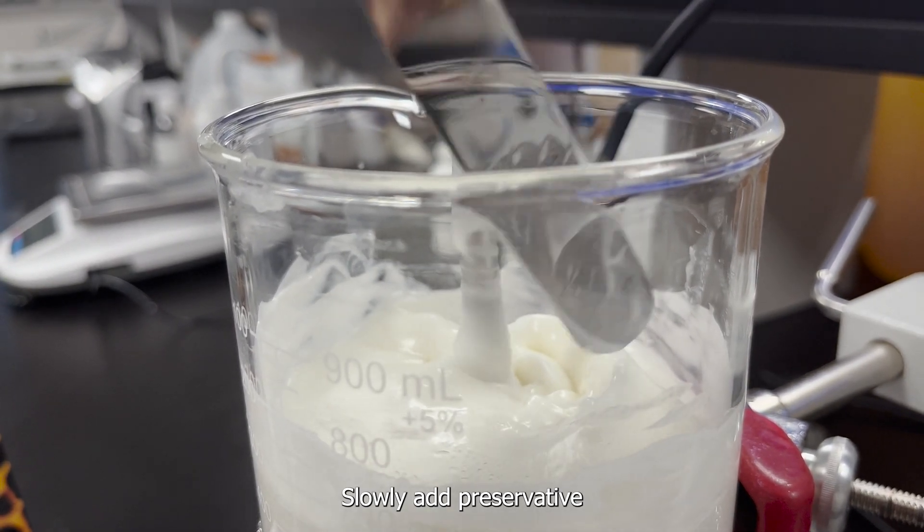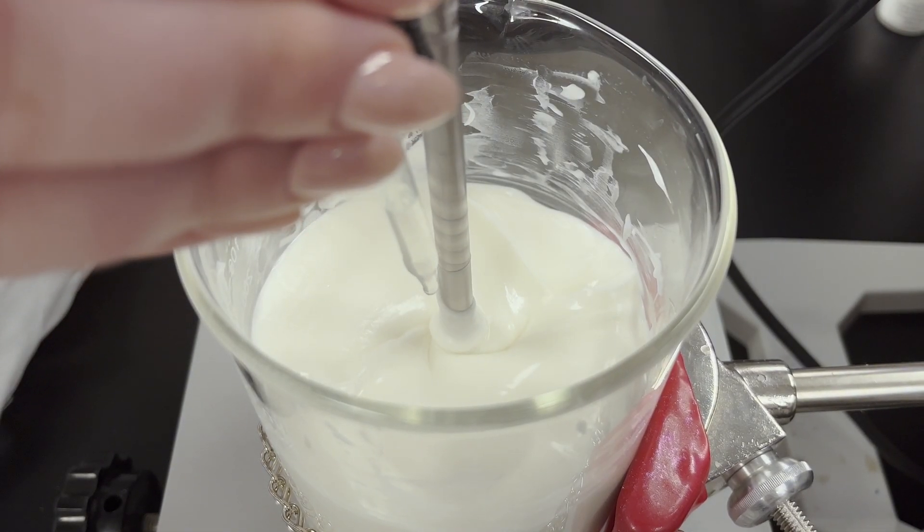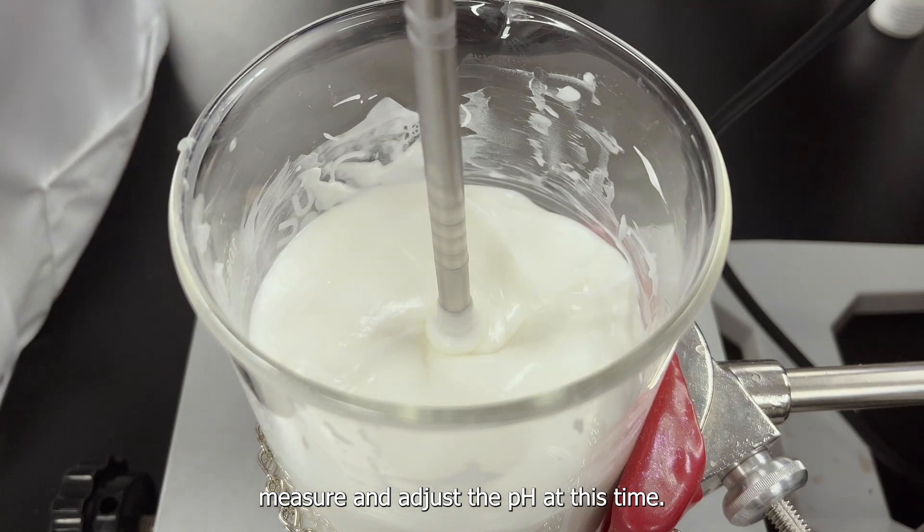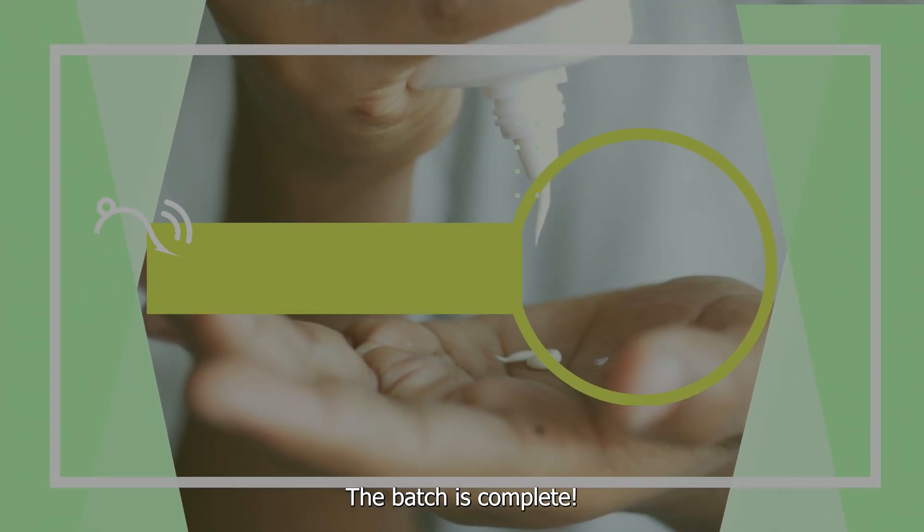Slowly add preservative to the batch. Mix until homogeneous. Measure and adjust the pH at this time. The batch is complete.